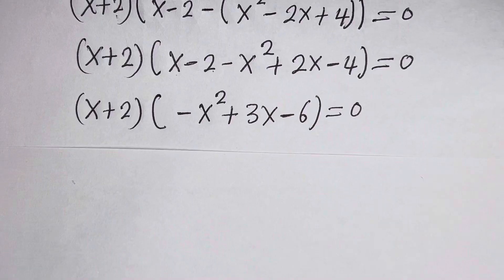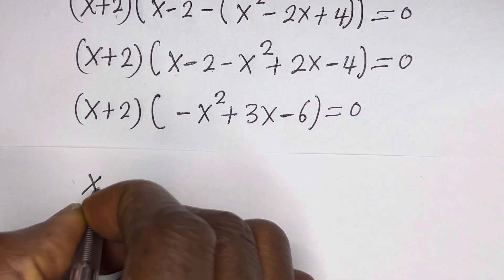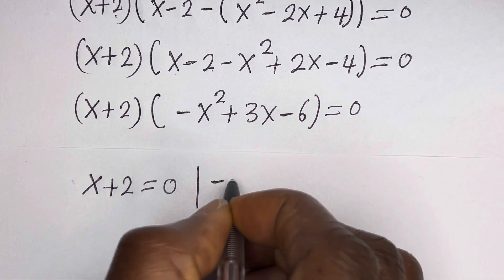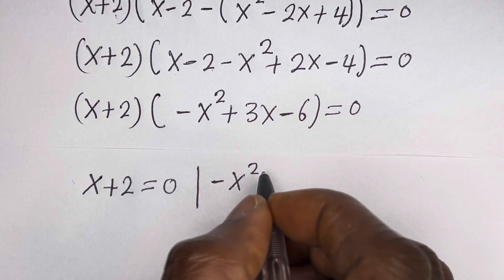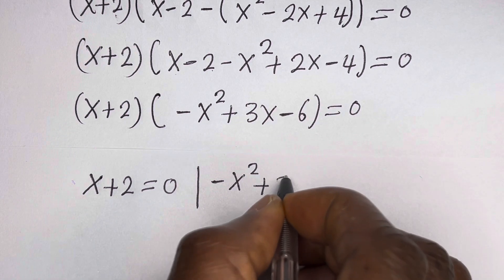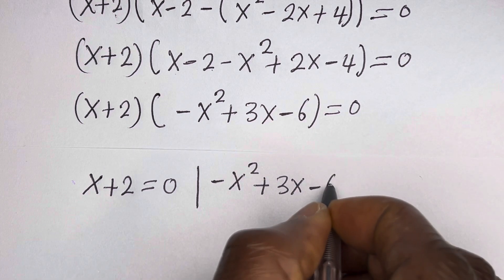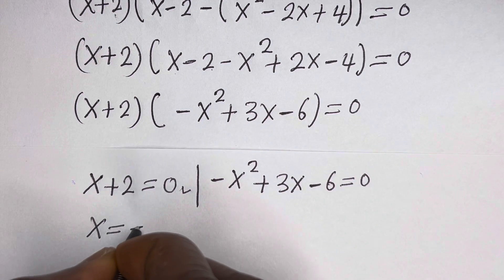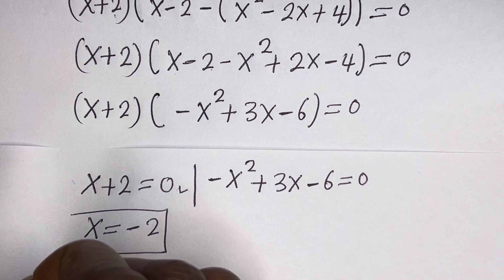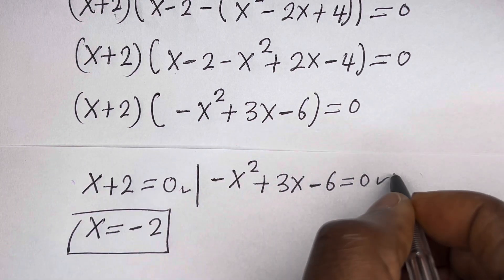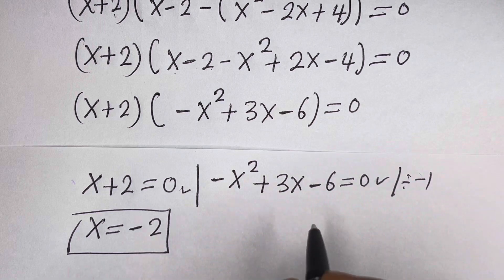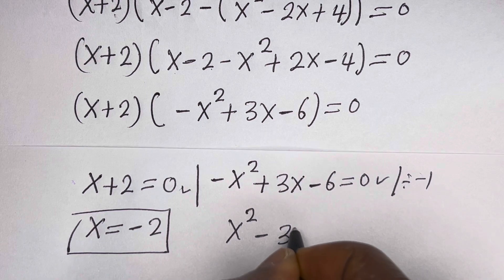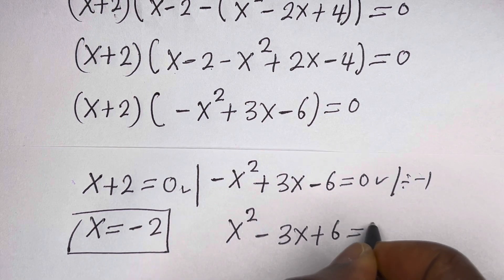There are two cases. The first case is s plus 2 is equal to 0, and the second case is minus s squared plus 3s minus 6 is equal to 0. From the first case, s is equal to minus 2. From the second, dividing by minus 1, we get s squared minus 3s plus 6 is equal to 0.